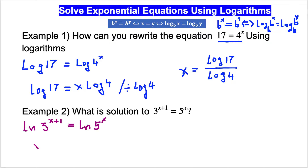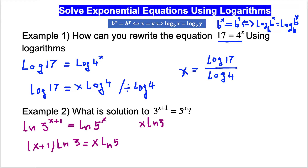Now we apply the power property of logarithms. The exponent (x+1) comes to the front, giving us (x+1) times ln 3 equals x times ln 5. Distributing on the left side: x times ln 3 plus ln 3 equals x times ln 5.